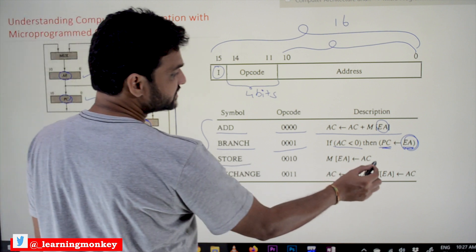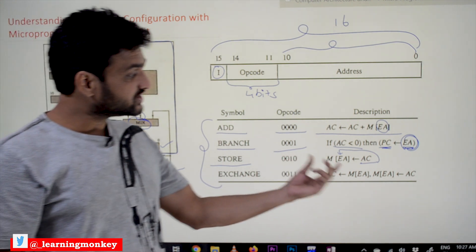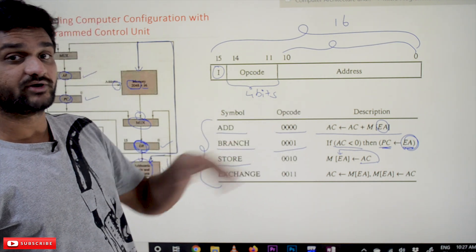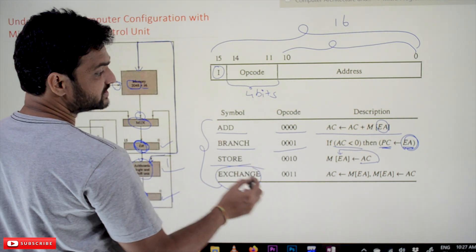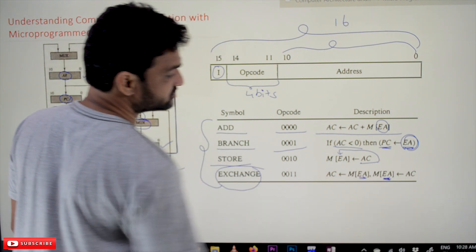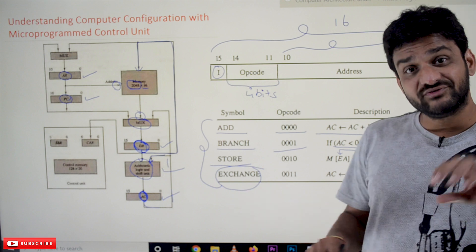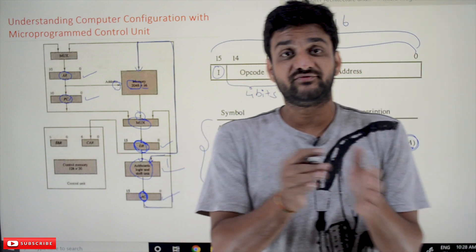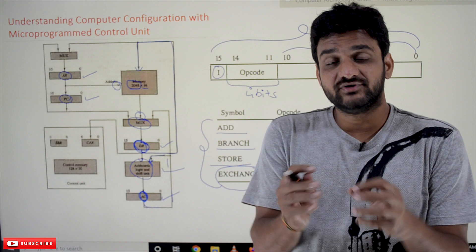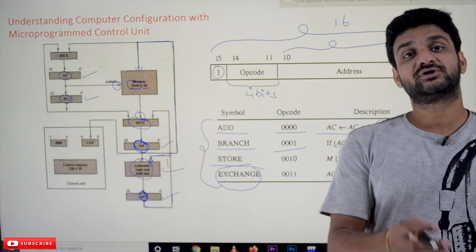The STORE instruction: the value stored in the Accumulator gets transferred to the memory location specified by the effective address in the instruction — so based upon the effective address, the value in the Accumulator gets stored onto that memory location. The EXCHANGE instruction: the value in the Accumulator and the value at the effective address in memory get exchanged — the memory value transfers to the Accumulator. We will clearly understand how each of these instructions gets executed using the microprogrammed control unit in our later videos.